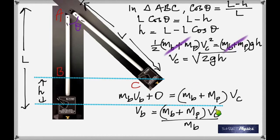So first find the height, use that height to find the common velocity, then use that to find the velocity of the ball. It takes five minutes if you really understood it. This is a very important lab because we applied conservation of energy and then conservation of momentum.